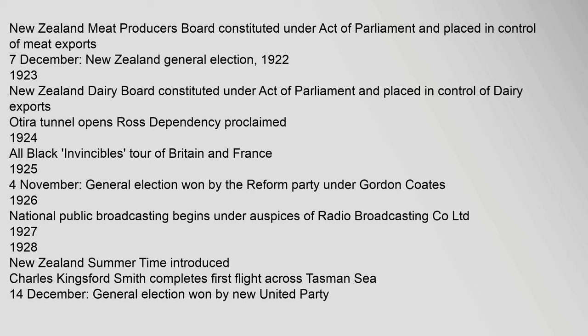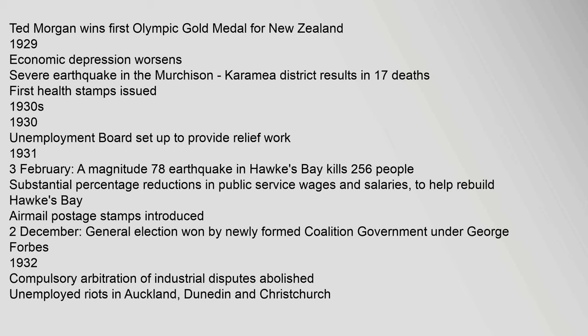1925, 4 November: General election won by the Reform Party under Gordon Coates. 1926: National Public Broadcasting begins under the auspices of Radio Broadcasting Co. Ltd. 1927–1928: New Zealand Summer Time introduced. Charles Kingsford Smith completes first flight across the Tasman Sea. 14 December: General election won by New United Party. Ted Morgan wins first Olympic gold medal for New Zealand. 1929: Economic depression worsens. Severe earthquake in the Murchison–Karamea District results in 17 deaths. First health stamps issued.